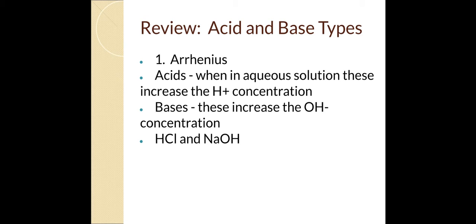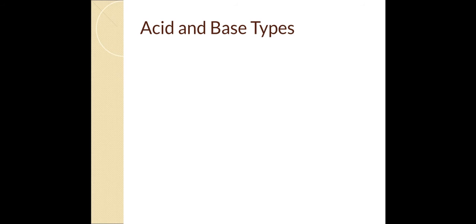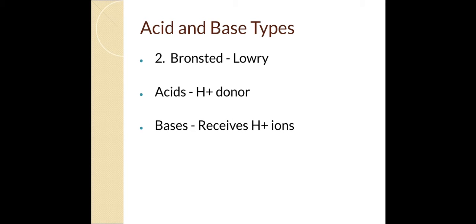The next theory is called the Brønsted-Lowry acid-base theory. Brønsted-Lowry's idea revolves around this: acids are anything that can donate a proton — an H+. A hydrogen ion is considered to be a proton. Think about hydrogen when it's neutral: it has one proton and one electron. If you take away the electron, it's just a proton. So acids donate protons, and in a Brønsted-Lowry reaction you have to have a base receive that proton.